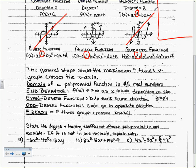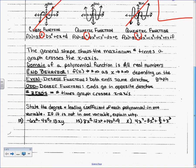Are you kind of okay? I don't think we've done anything too crazy today. The general shape shows the maximum number of times a graph crosses the x-axis. The domain of a polynomial function is all real numbers. We just did end behavior. This is a super fancy way that you'll get into in pre-calc of writing it — for now, what we're doing is okay.